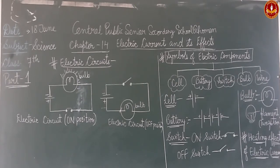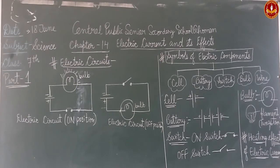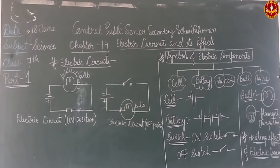The amount of heat produced in the conductor depends on its material, length, and thickness. How much heat is produced depends on the material the electric device is made of, its length, and its thickness. So today we discussed electric circuits, symbols of electric components, and heating effects of electric current.